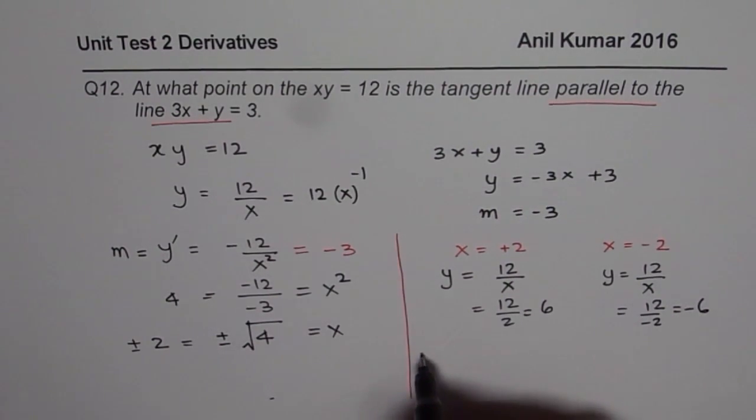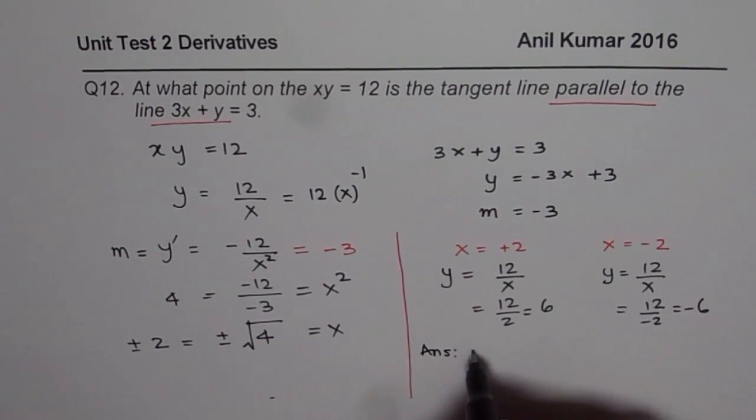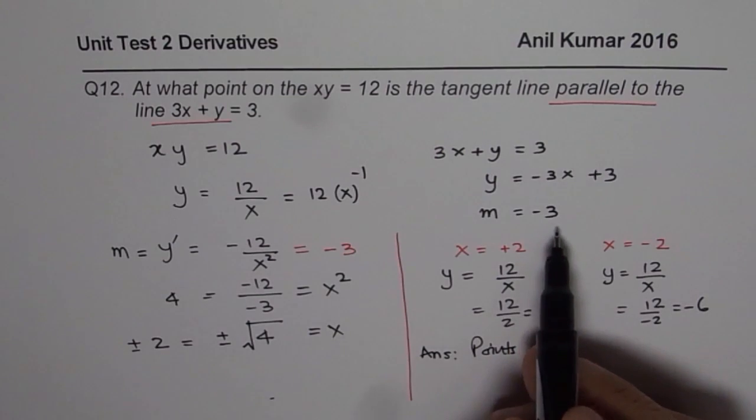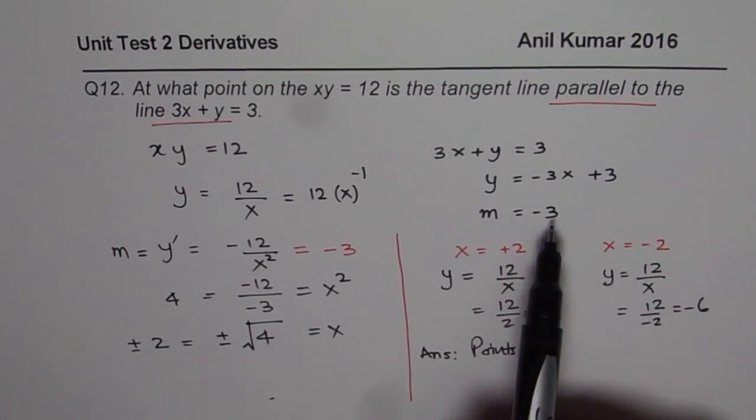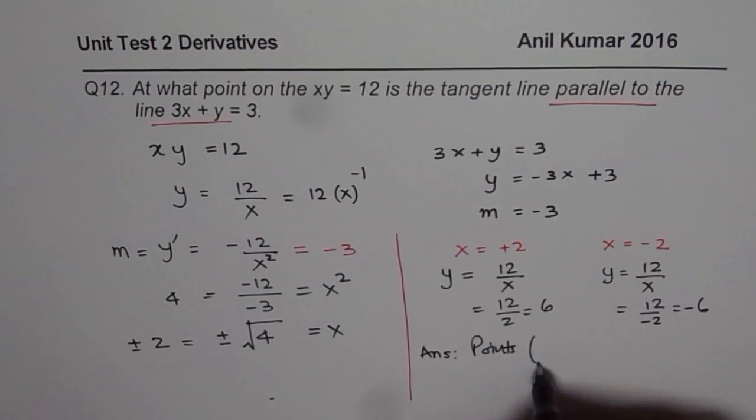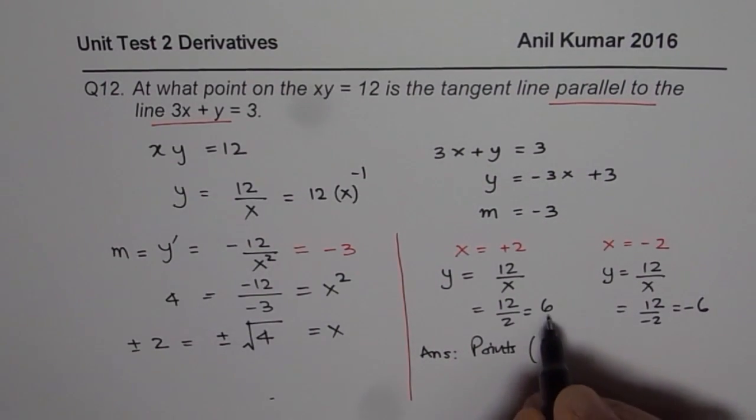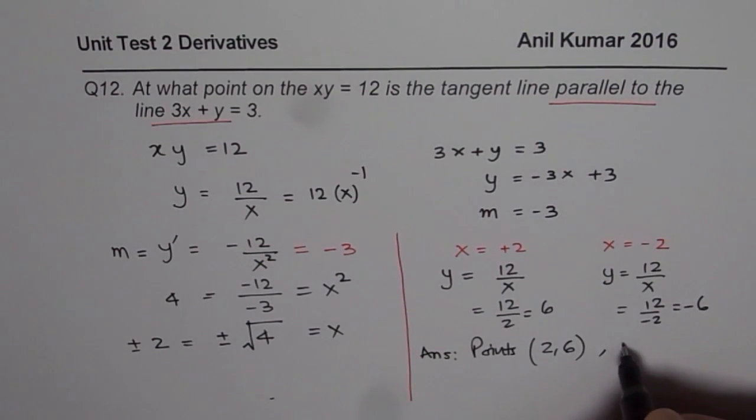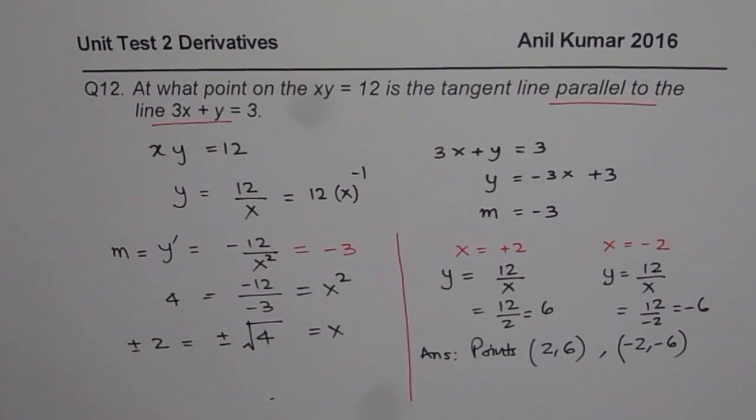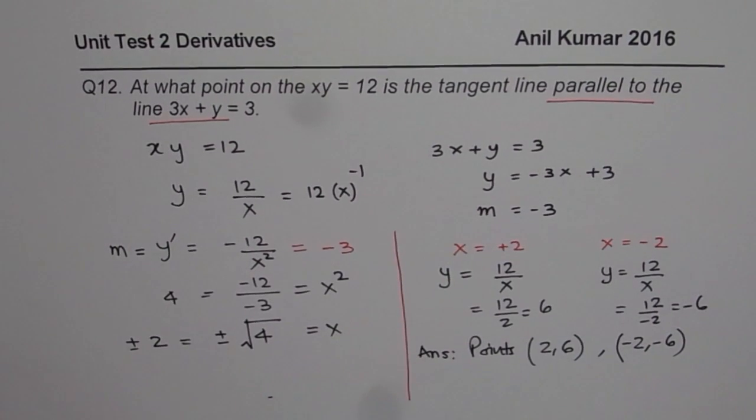And therefore, our answer is that the points with slope of minus 3 that will make the tangent parallel to the given line are x value of 2, y value of 6, or minus 2, minus 6. So that is how this question should be answered.